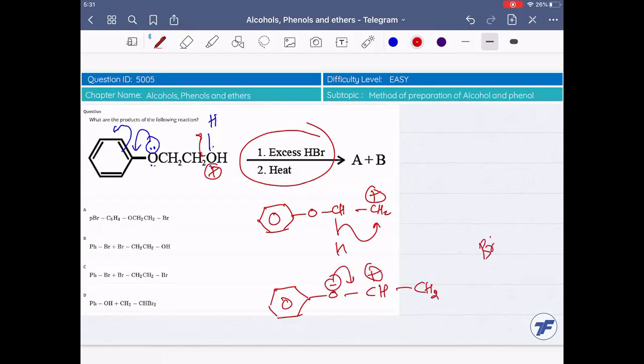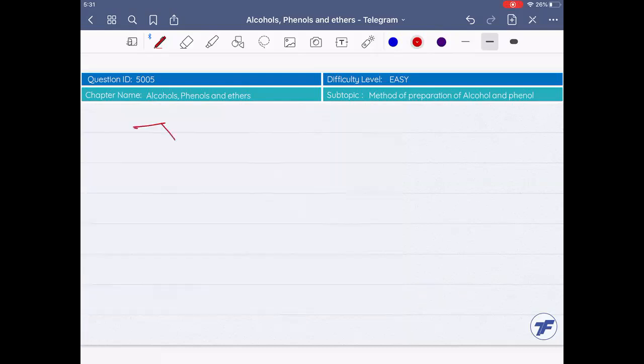So now BR minus attacks. The final product will be OH CH BR and here CH3. Now HBr is excess, so protonation will be used, and now BR minus attack. It will only be here.